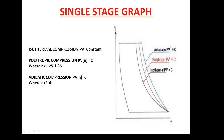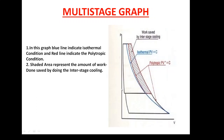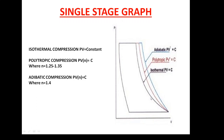This is a graph which has been drawn between pressure and volume — a pressure versus volume curve. As you can see here, as the volume is decreasing, the pressure is increasing. This process is mainly carried out in three ways: isothermal, polytropic, and adiabatic.